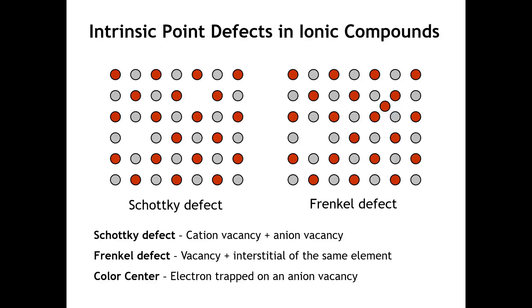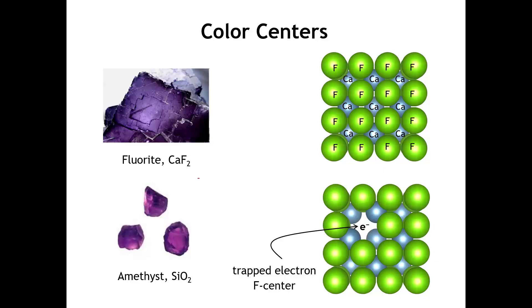So a color center is an electron that is trapped on the lattice site of an anion. So if we were to look at the mineral fluorite or the gemstone amethyst, that purple color you see in each case comes from the presence of color centers. So if you were to take a colorless crystal of fluorite and expose it to high-energy ionizing radiation, you could create some fluoride vacancies. And as we see on the right, what happens is to maintain charge balance, instead of having a fluoride ion there, we just put an electron in that cavity.